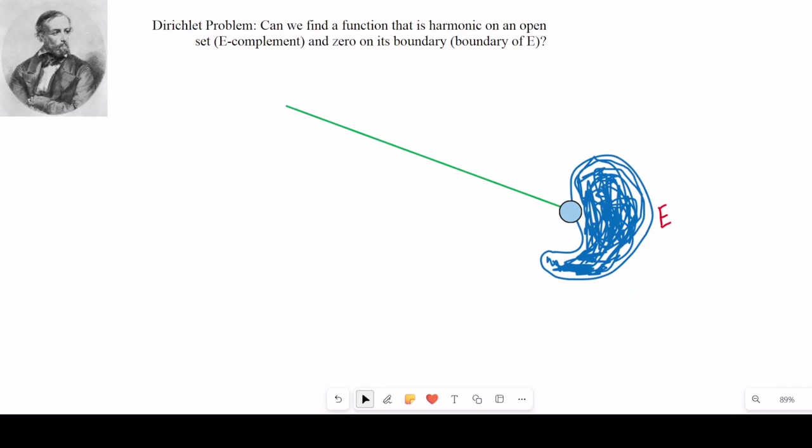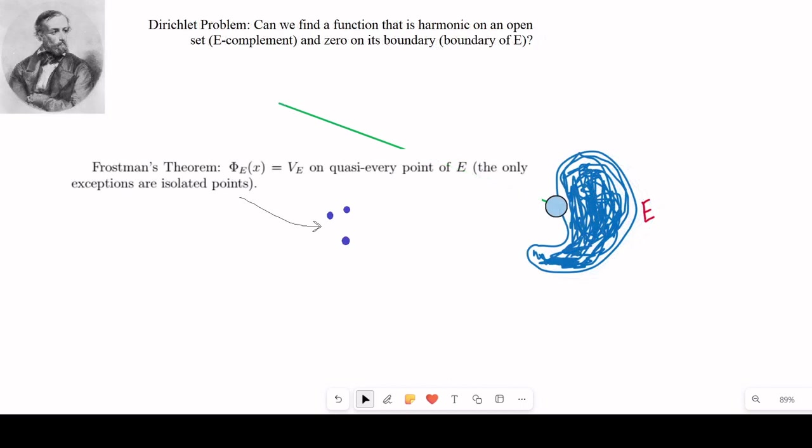Frostman's theorem verifies our water level intuition. The potential at nearly every point on the set is constant, and in fact the same numerically as the robin constant. I say nearly every because E might have some weird isolated points the charge couldn't reach, but we'll ignore that possibility for now.